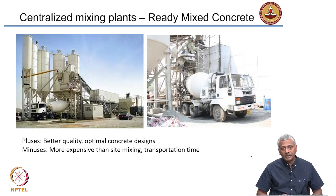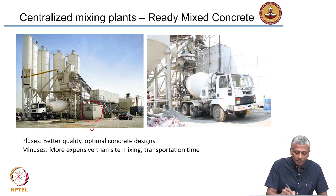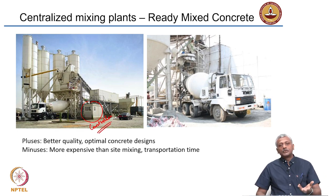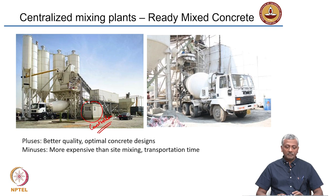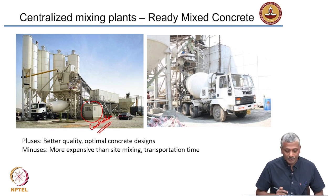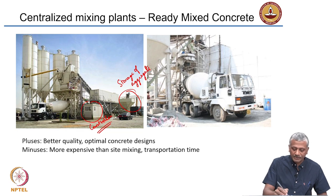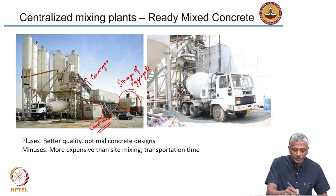In most cases, for good quality concrete, we rely on centralized batching plants. This is a picture of a centralized batching plant. There is a control room which controls the operations of batching and mixing using computerized equipment. The exact quantities of material required are batched using computerized equipment, mixed for a certain period of time, and then discharged. You can see storage facilities for aggregates, which are conveyed using conveyor belts into the mixing equipment.